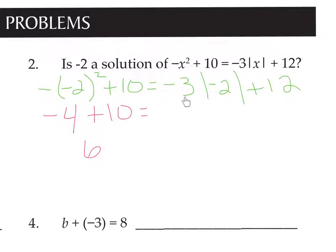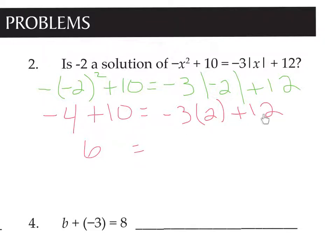On the right, this is multiply, but you have to simplify the absolute value first. The absolute value of negative 2 is positive 2. So this becomes negative 3 times positive 2, plus 12. Multiply before add: negative 6 plus 12 is positive 6. So we have 6 equals 6. Is negative 2 a solution? Yes, it is.